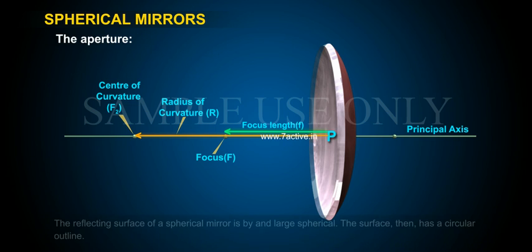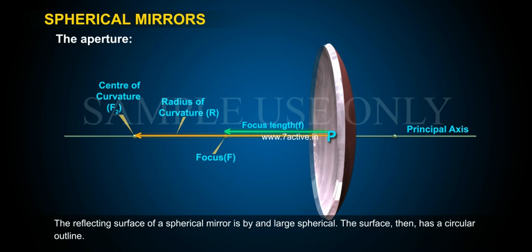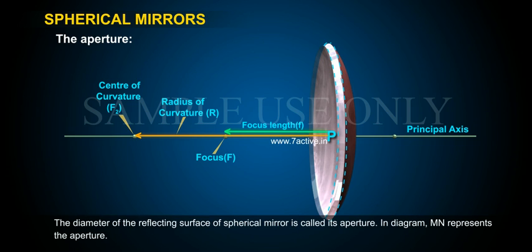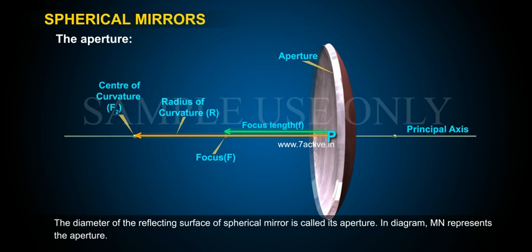The aperture. The reflecting surface of a spherical mirror is by and large spherical, and the surface has a circular outline. The diameter of the reflecting surface of the spherical mirror is called its aperture. In the diagram, MN represents the aperture.